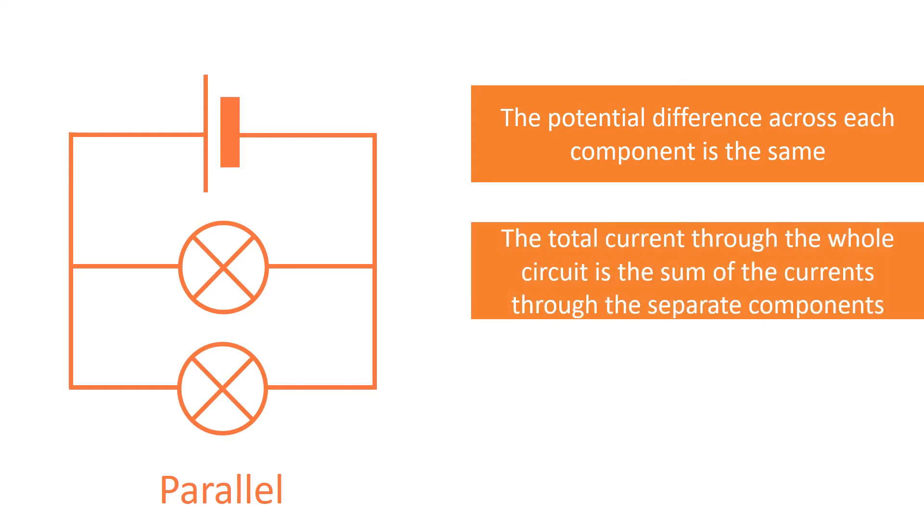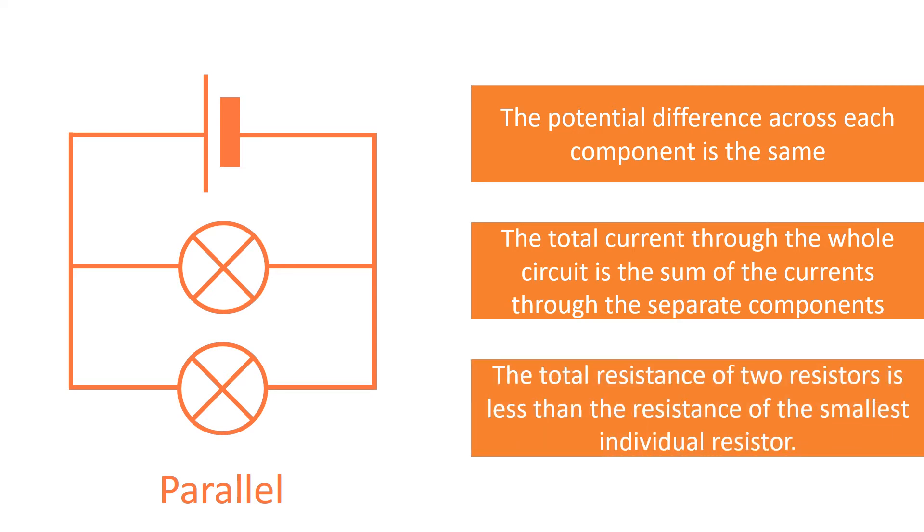The total current through the whole circuit is the sum of the currents through the separate components. And finally, the total resistance of two resistors that are connected in parallel is less than the resistance of the smallest individual resistor.